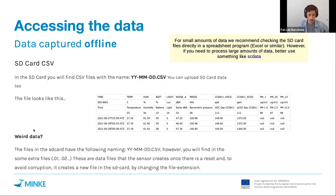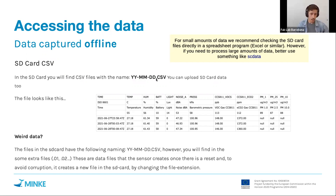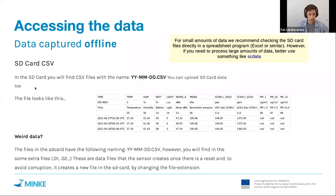Sometimes you'll see unusual files on the SD card that don't end with .csv but instead with .01, .02, .03, while having the same date in the filename.